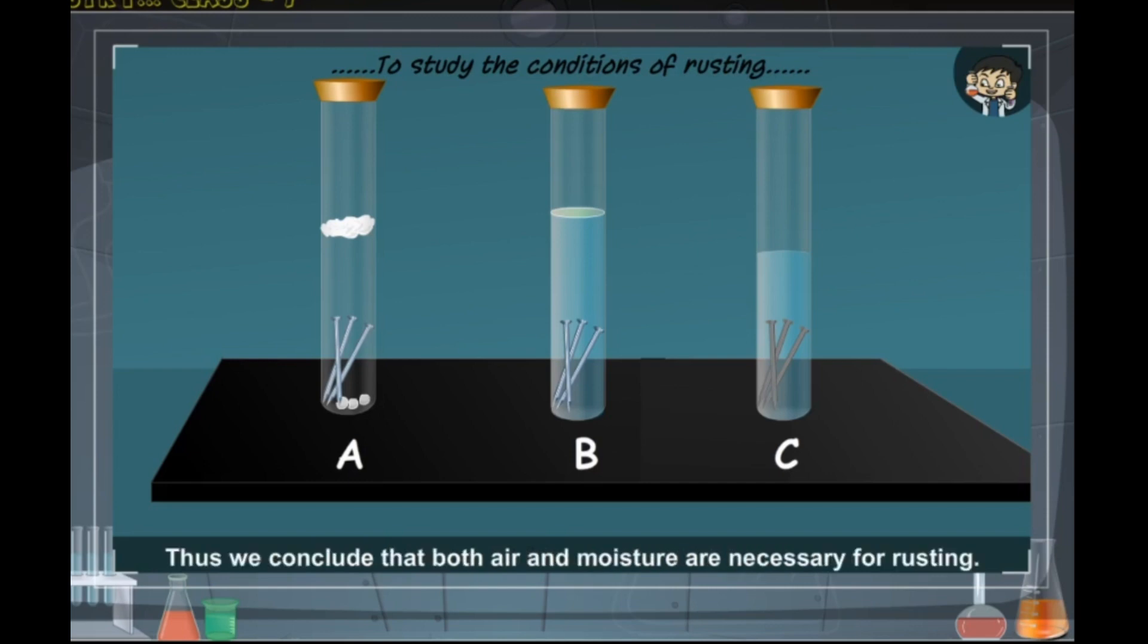Thus we conclude that both air and moisture are necessary for rusting.